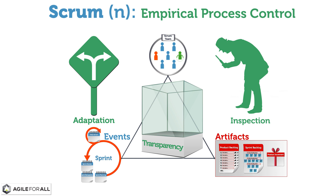If, during inspections, anything is determined to be outside of the goals of the effort, the process, plans, or product are adapted. The adaptation is made as soon as possible to optimize for a better outcome.